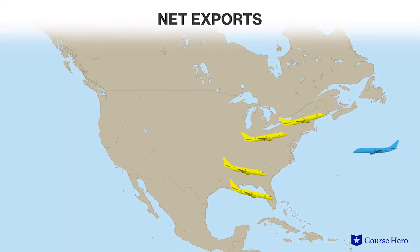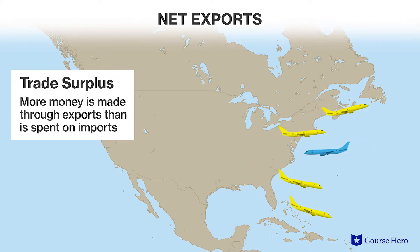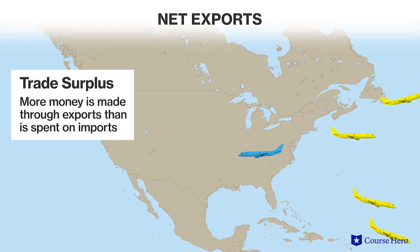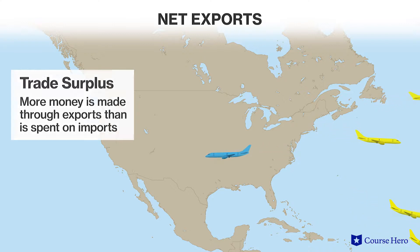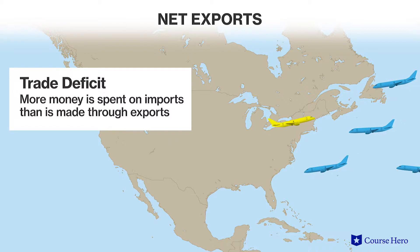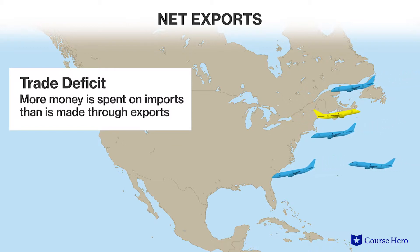A country in which more money is made through exports than is spent on imports is said to be running a trade surplus. In this case the net exports would be positive. A country in which more money is spent on imports than it makes through exports is said to be running a trade deficit. In this case the net exports would be negative.